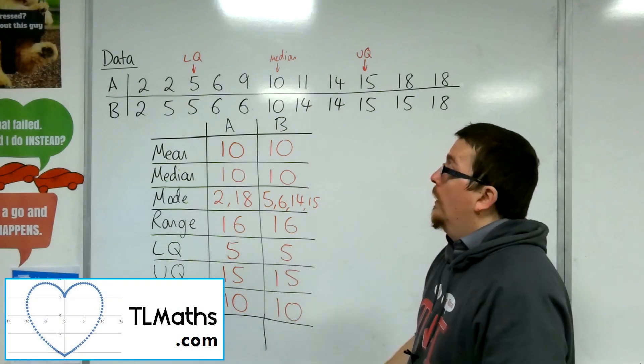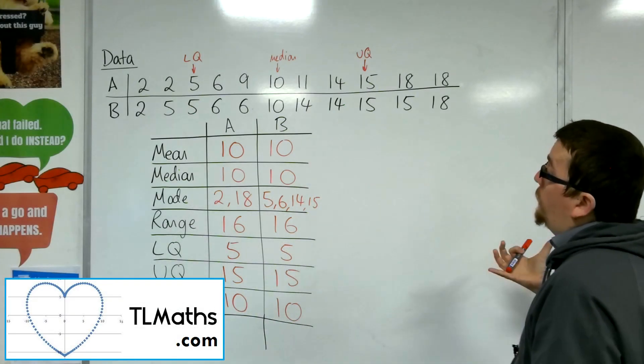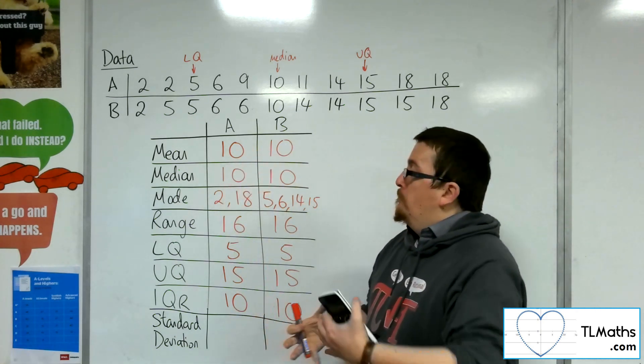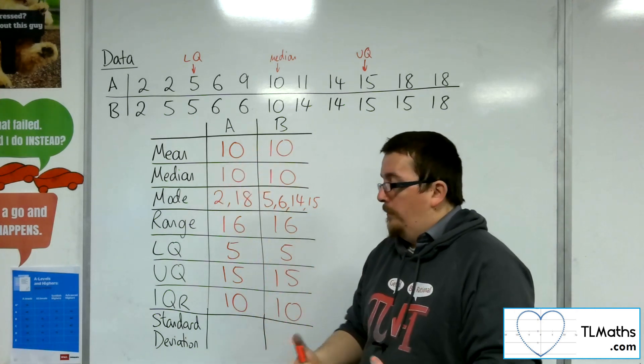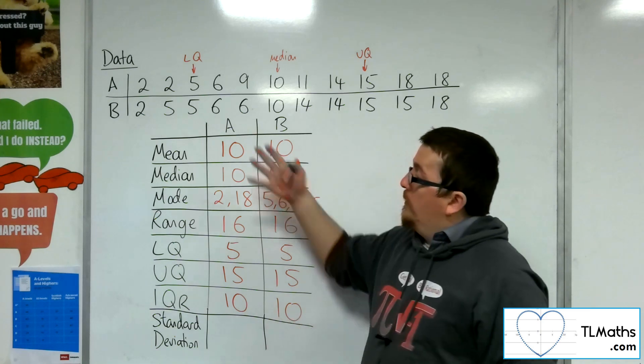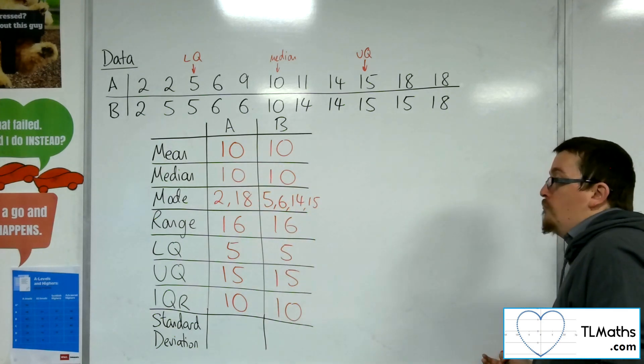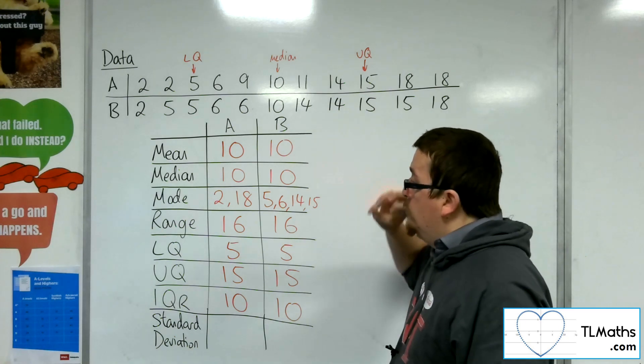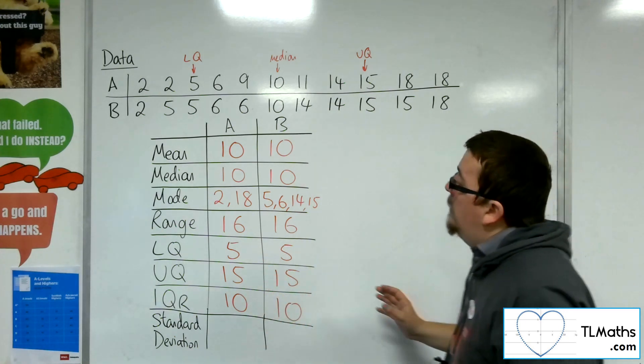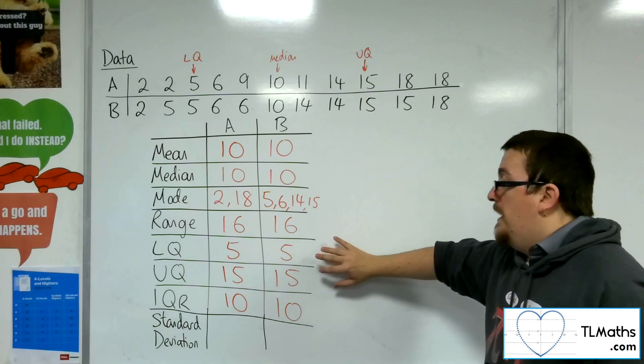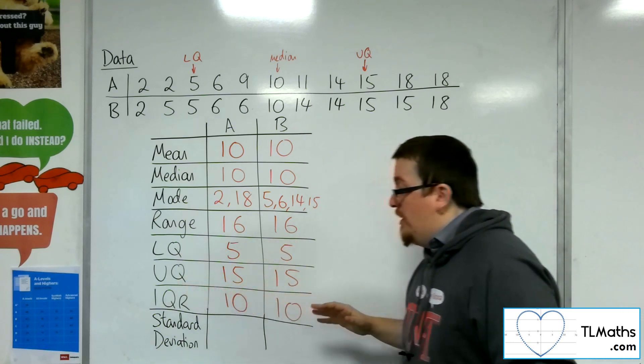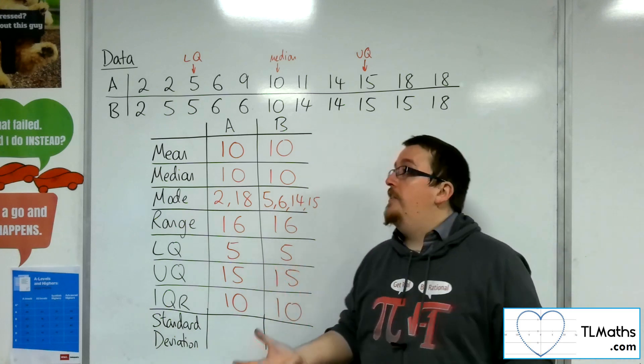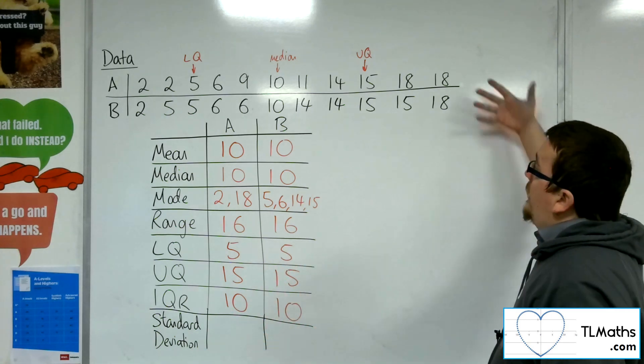So a couple of videos ago, I looked at these two sets of data, and we compared each of these statistical bits of analysis. We've got mean, median, mode, range, lower quartile, upper quartile, interquartile range. And what we found was the means were the same, medians were the same, the modes didn't really make much sense comparing them, the range was the same, the quartiles were the same, and so the interquartile range was the same. So we were left scratching our heads of how can we compare these two sets of data, because clearly they are different.